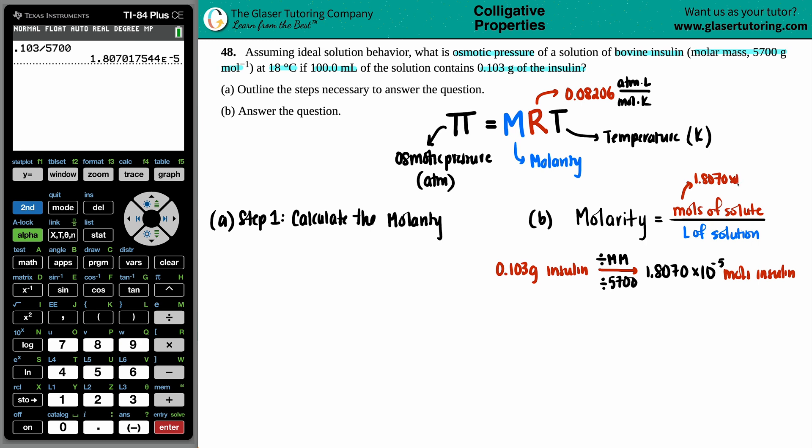1.8070 times 10 to the negative 5th. Now we just need to find the liters. They did say that we had 100 mils of the solution, so I just have to go from 100.0 mils to liters. Milliliters to liters divide by 1,000. You could take the decimal and move it to the left three times. So this would be 0.1000 liters.